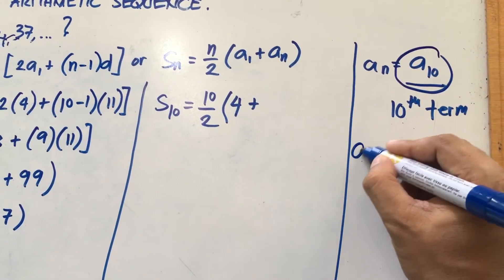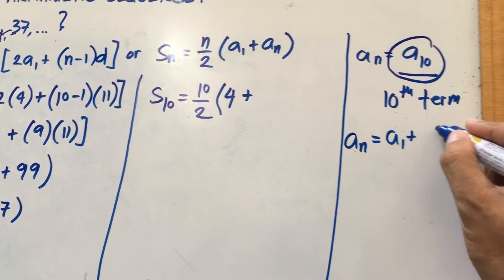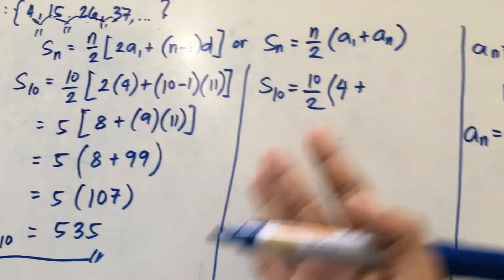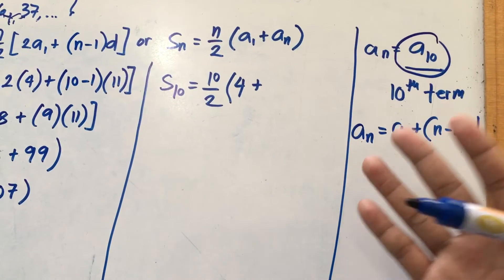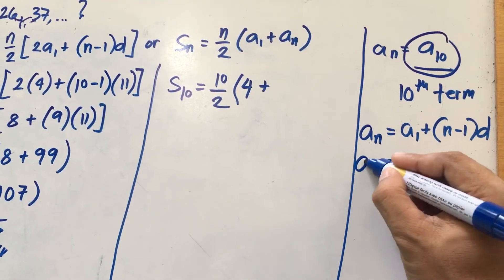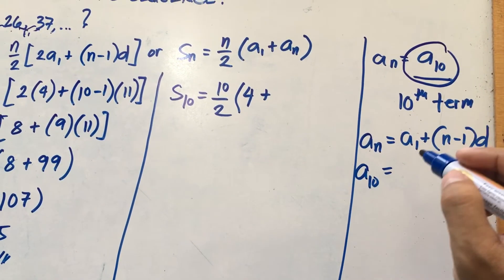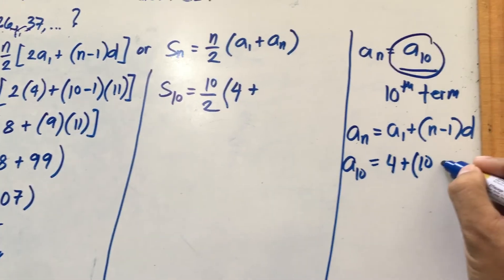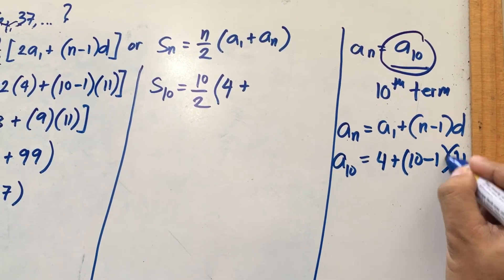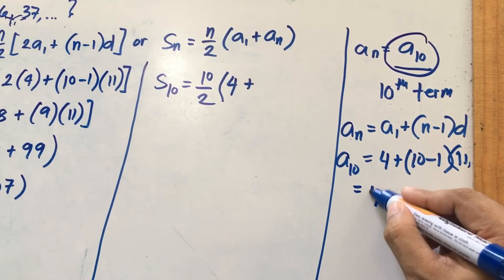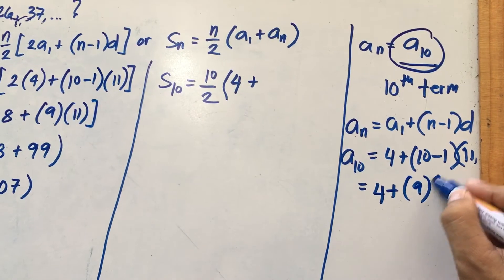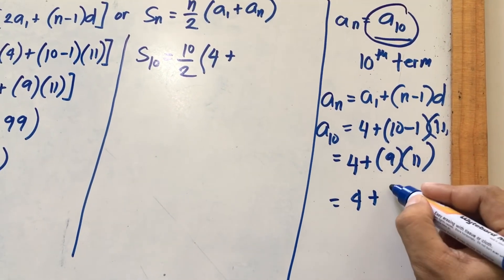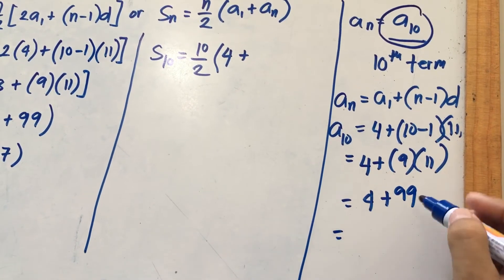The formula for A sub n is A sub 1 plus N minus 1 times D. So for A sub 10: your A sub 1 is 4, plus N is 10 minus 1, then times D which is 11. Simplify: 4 plus 9 times 11. 9 times 11 equals 99. So 4 plus 99 equals 103. The 10th term is 103.